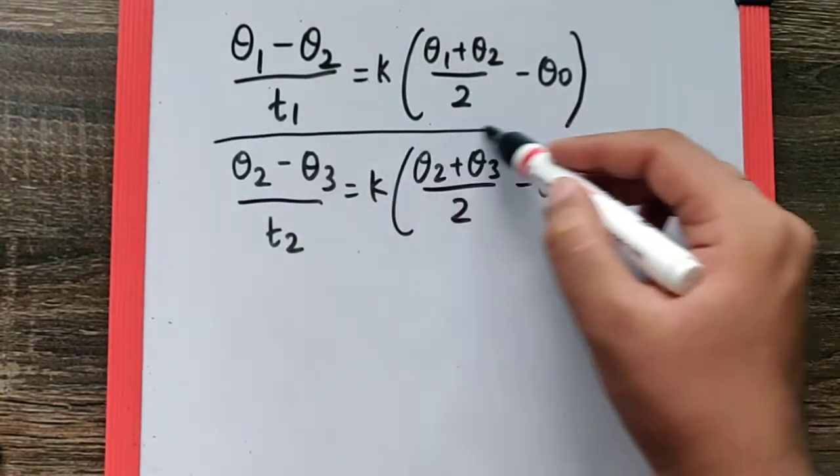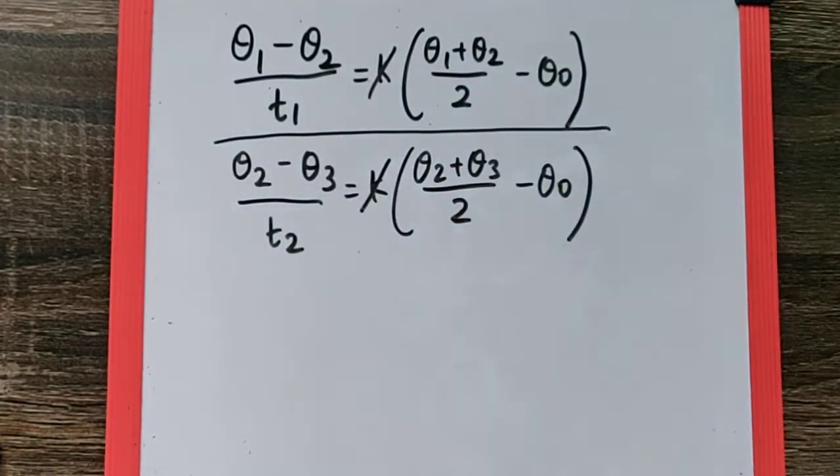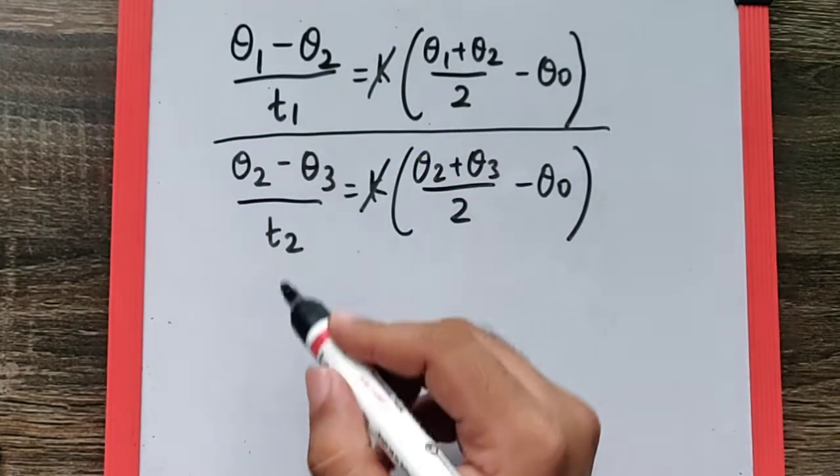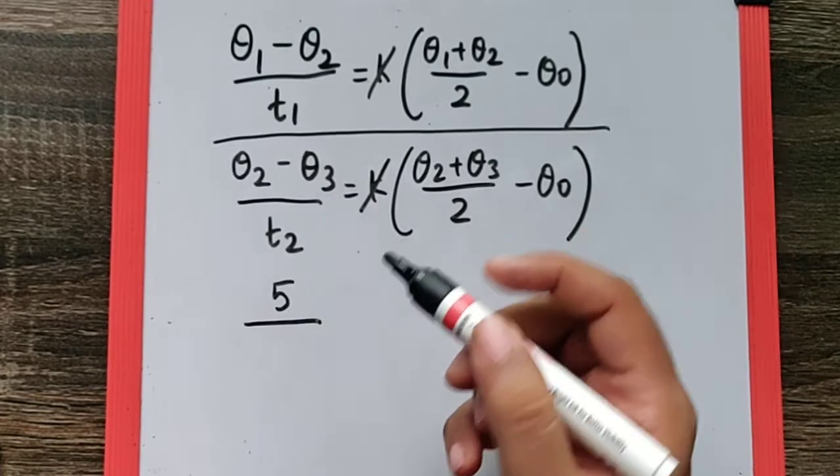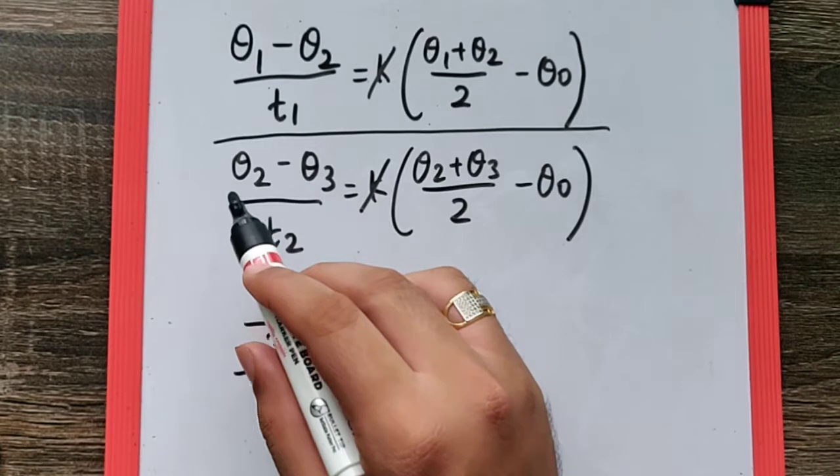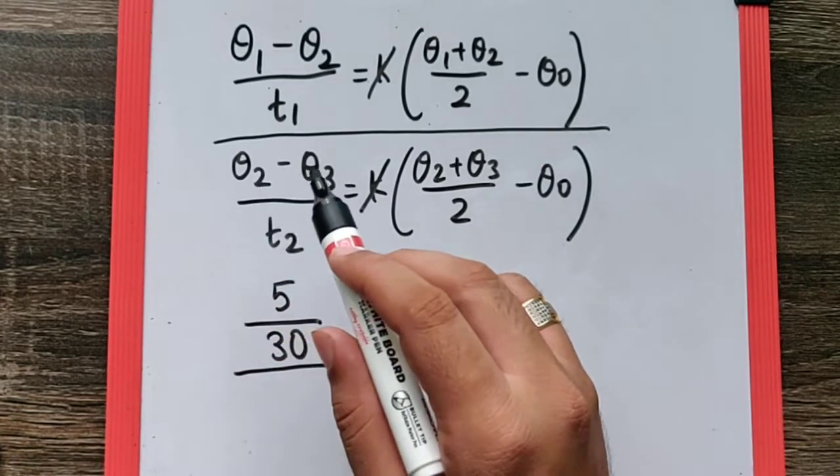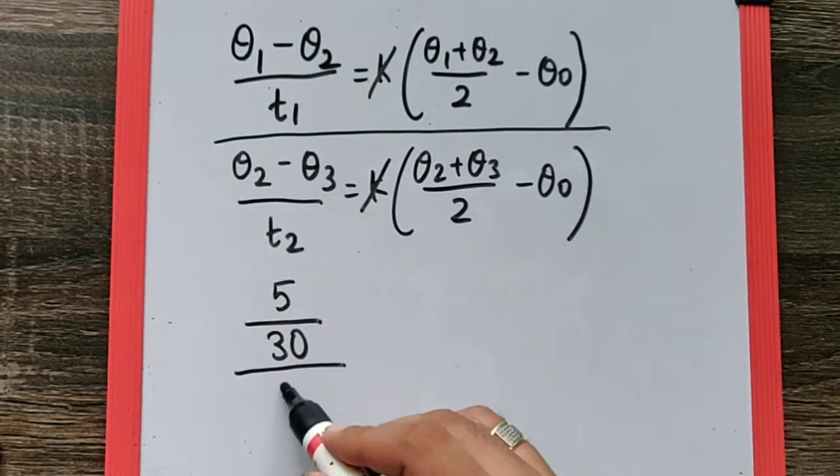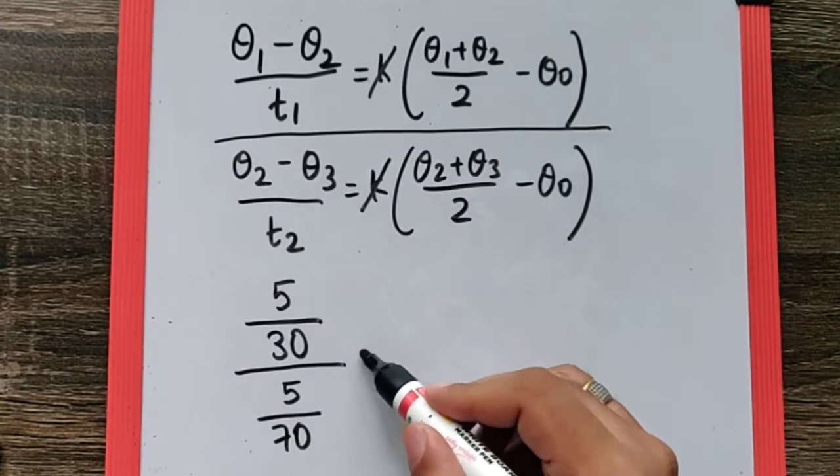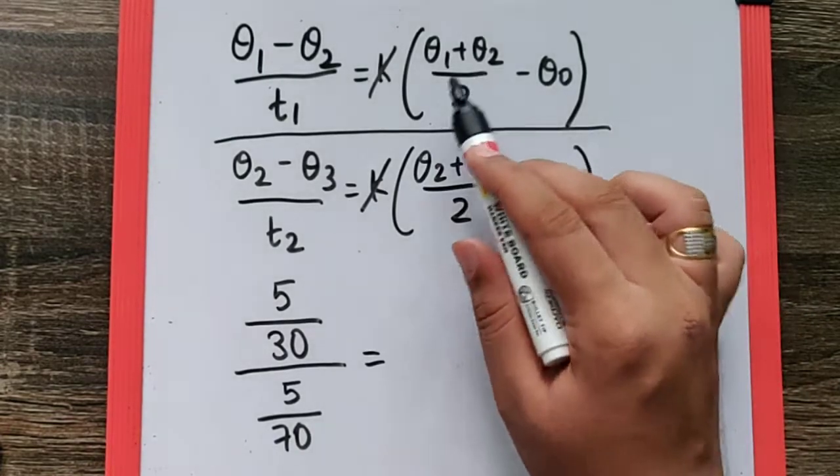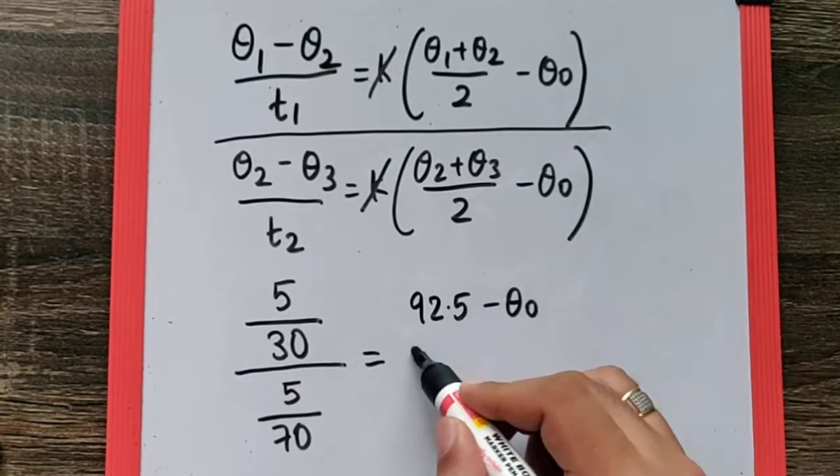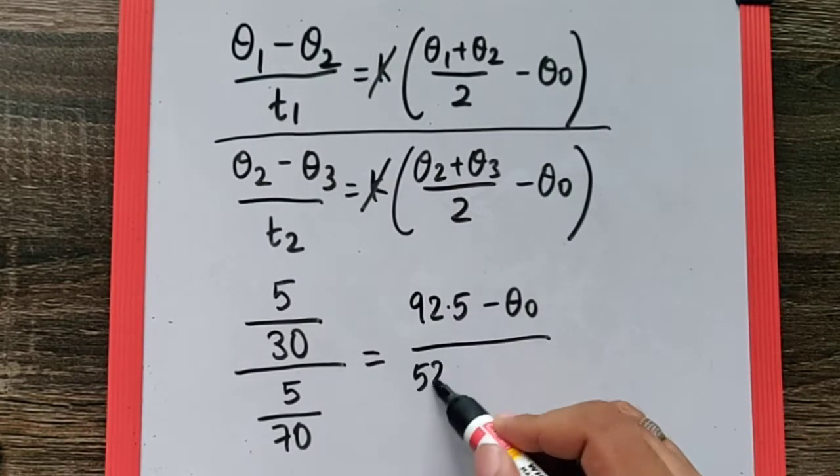If we take the ratio of the two, we get rid of this K. If we substitute the values, we have 95 to 90, that means 5 degrees Celsius drop in time 30 seconds, upon 55 to 50, that is again 5 in time 70 seconds, which is equal to the average of 95 and 90 is going to be 92.5, and the average of 55 and 50 is going to be 52.5.